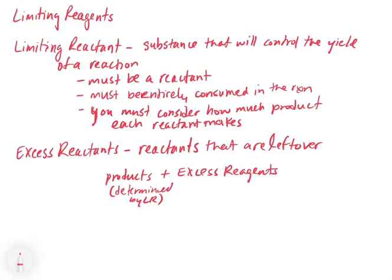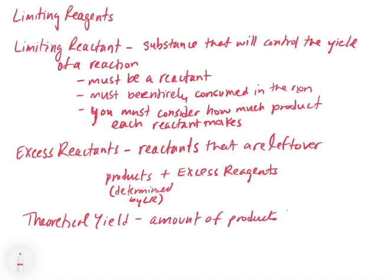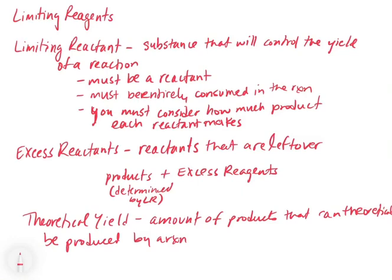Now let's talk about the two different types of yields we can get. The first type is the theoretical yield. This is the amount of product that can theoretically be produced by a reaction — when you sit down and do the math, you calculate a yield or how much product you can make. That is the theoretical yield, and it is determined by the limiting reagent.